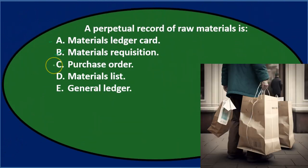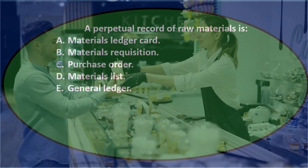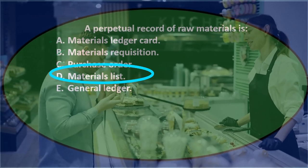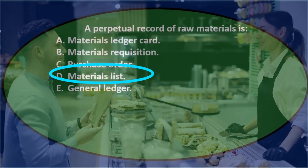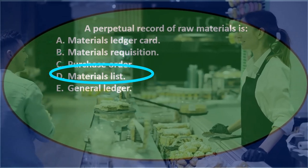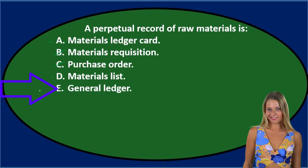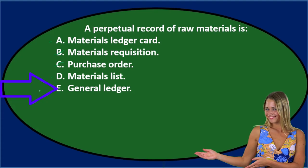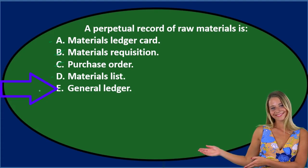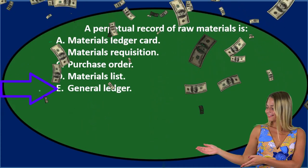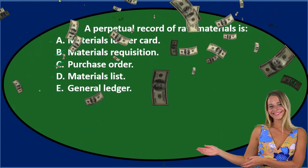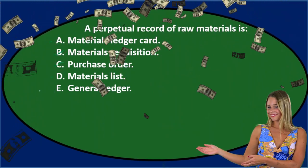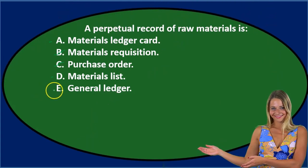Option C, purchase order, has to do with materials, but that's really the request for us to purchase materials from a vendor — it tells the vendor we'd like some materials. So it's not a perpetual record; I don't think it's C. Option D, materials list, sounds kind of reasonable — it could be a perpetual list of materials, so I'll keep that. Option E, general ledger, would be a kind of perpetual ledger, but it's not really a subsidiary ledger needed for inventory tracking. So I don't think it's E.